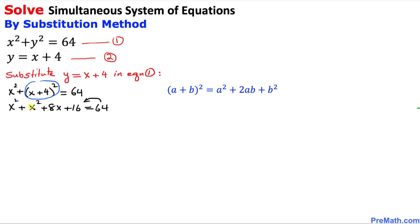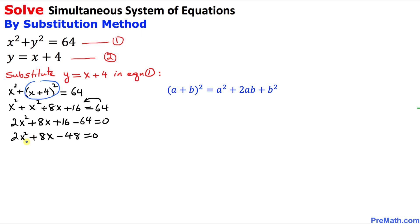Combining everything: x² + x² gives 2x², plus 8x, plus 16. Moving 64 to the other side gives −64, so 2x² + 8x − 48 = 0. All terms are divisible by 2, so dividing through by 2 gives us x² + 4x − 24 = 0. This is our quadratic equation.